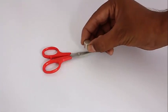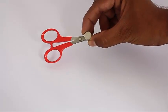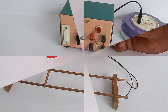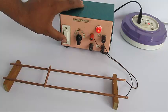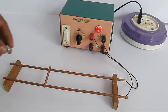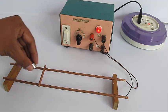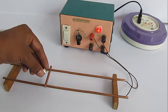Now switch on the battery eliminator and bring this strong magnet near the copper rod on the rail. The rod starts to move. You can keep pushing it all the way to the end.